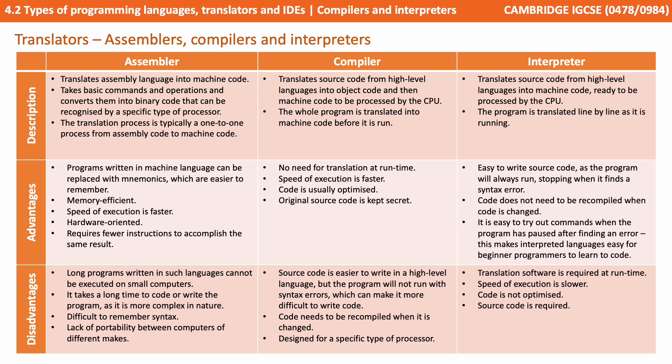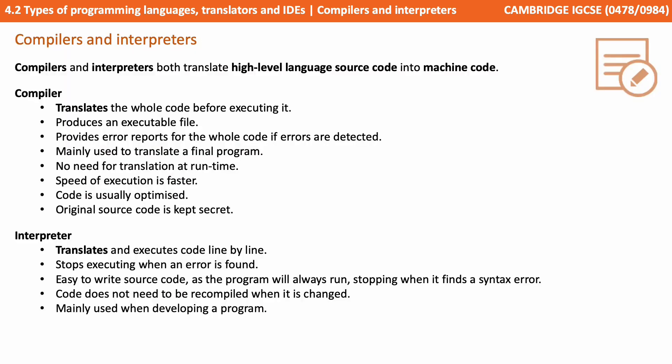On the screen now are the three different methods of translation we've been talking about: using an assembler, a compiler, and an interpreter. We provide a brief description and some of the advantages and disadvantages of each. That's everything you need to know for the exam — pause the video and take some notes.